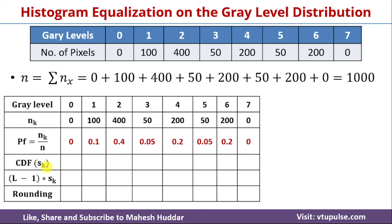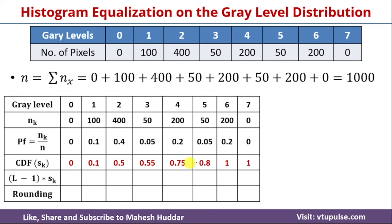Next, we need to calculate the cumulative distribution function, that is sk. Starting with gray level 0, which has probability 0, sk is 0. We add this to the next probability 0.1 to get 0.1 as the CDF for level 1. Then 0.1 is added to 0.4 to get 0.5. Then 0.5 is added to 0.05 to get 0.55, and so on. We calculate the CDF for each level, and once calculated they look something like this.